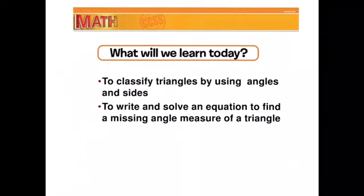There are three different ways we can label triangles based on the actual angles, and then three different ways we can name our triangles based on the sides. Some of these you've heard before and some might be brand new. Lastly, we're going to write and solve an equation to find the missing angle measure of a triangle.